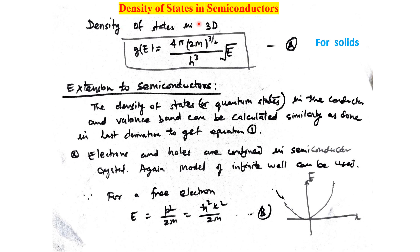Now we discuss the density of states in semiconductors. From our last lecture, the density of states in the three-dimensional case is given by g(E) ∝ E^(1/2), or more explicitly: g(E) = (4π / h³) × (2m)^(3/2) × √E. This was the general case.